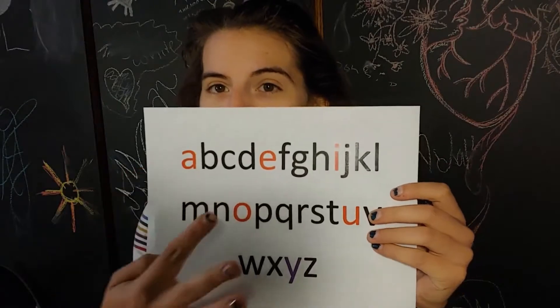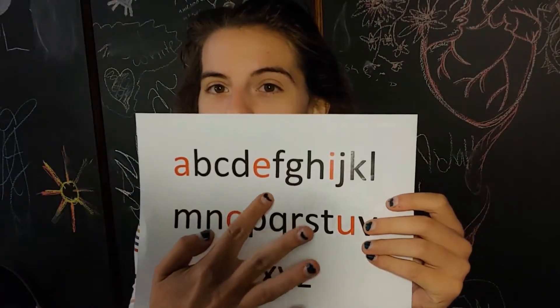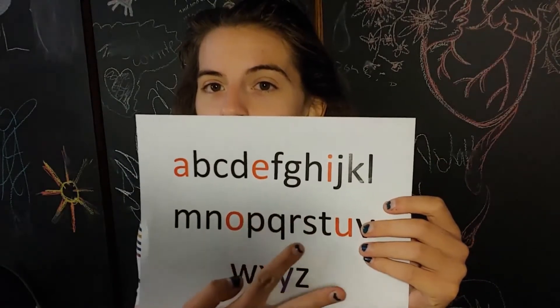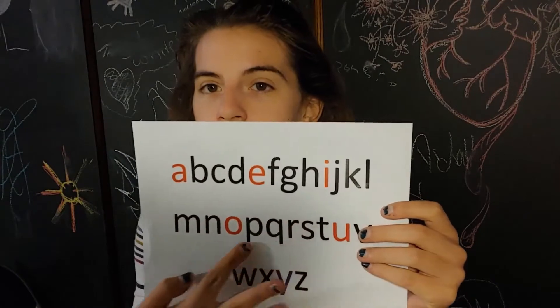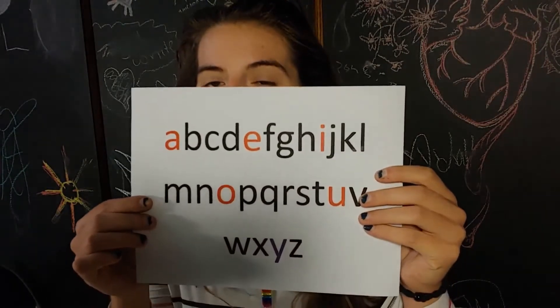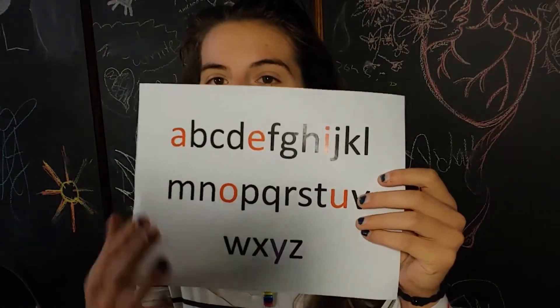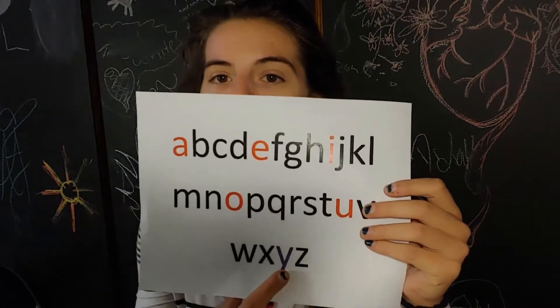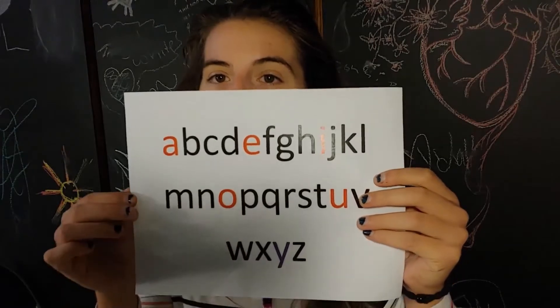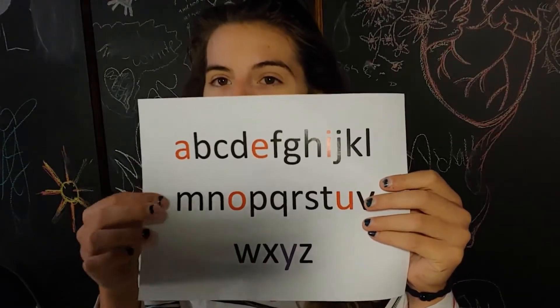A, E, I, O, U are all in red. All the rest of the letters except for Y are in black, and those are consonants.